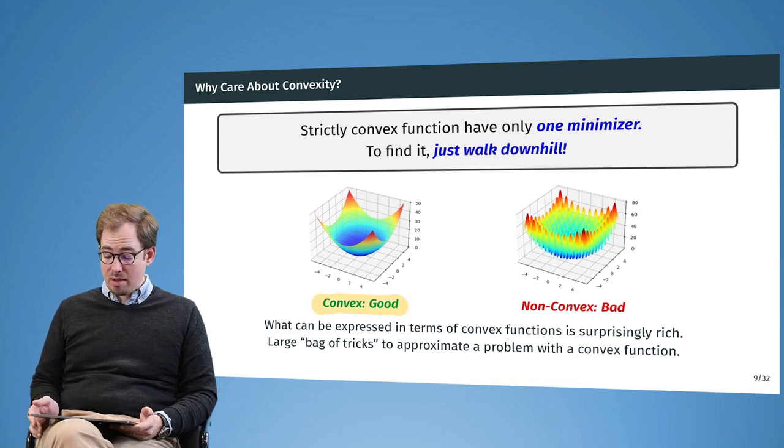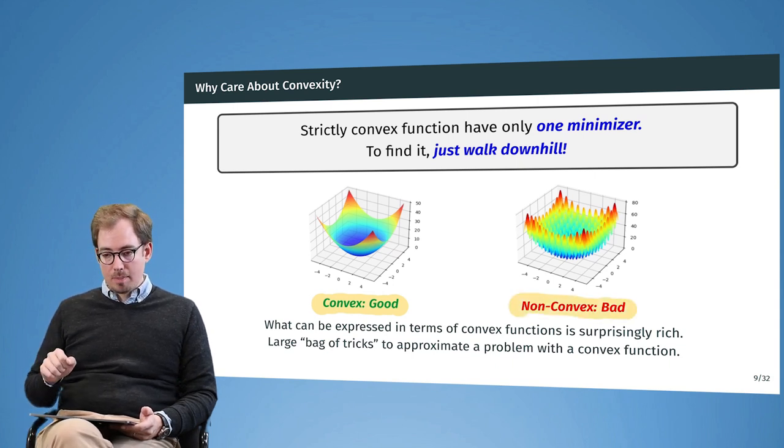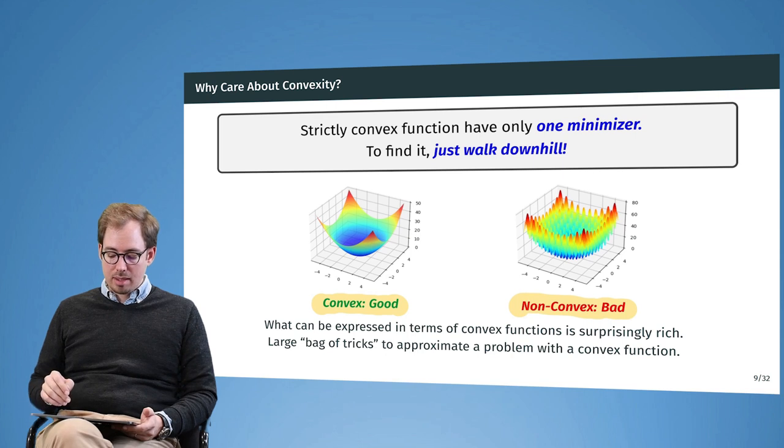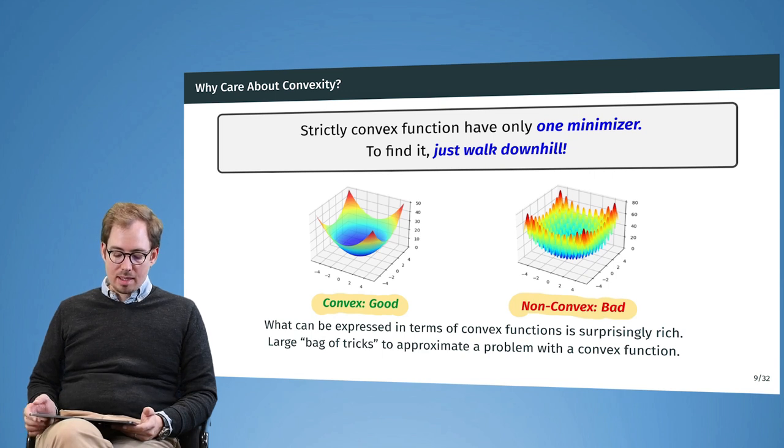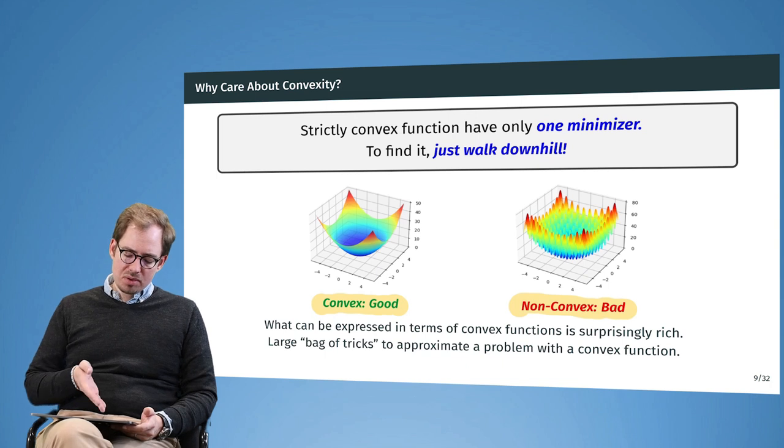Here you see on the left side a convex function. This one is good—we want to have convex functions. On the right-hand side, this is a non-convex function. As you can imagine, we would need many, many more samples that we take from the domain in order to find the minimum.